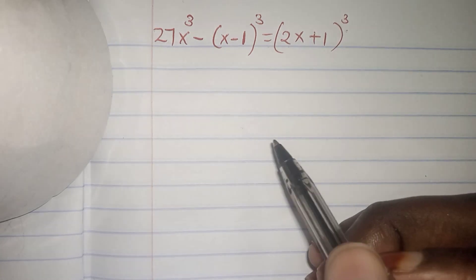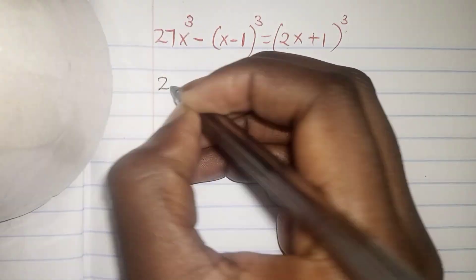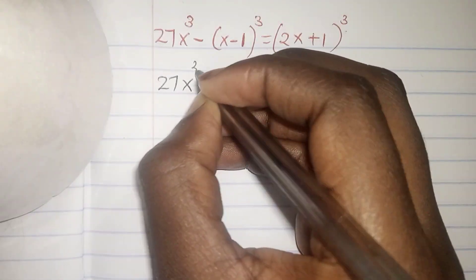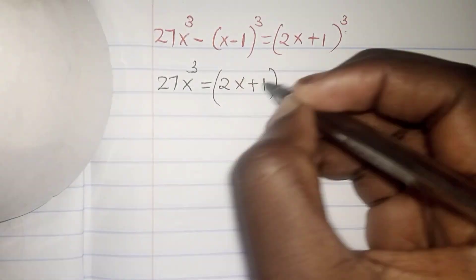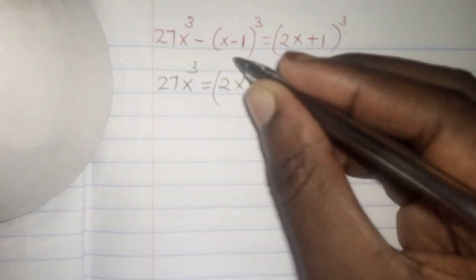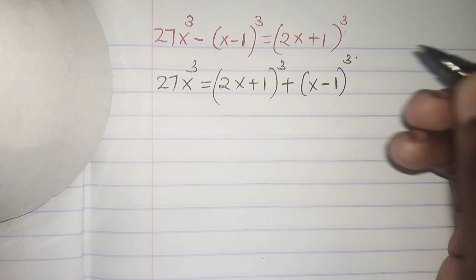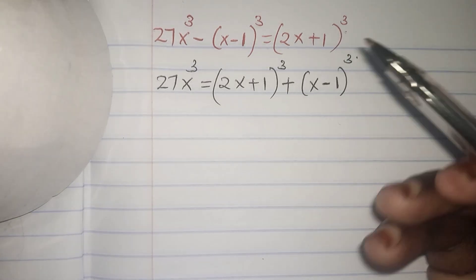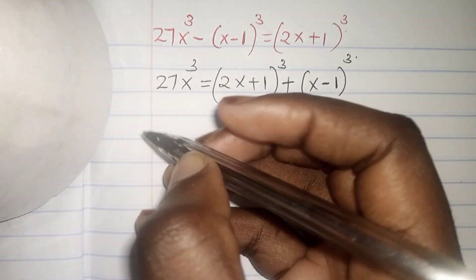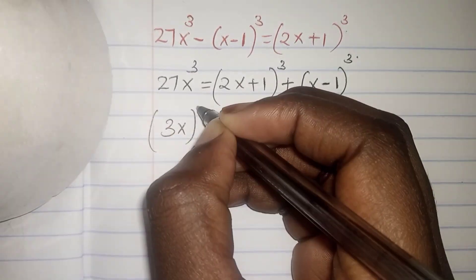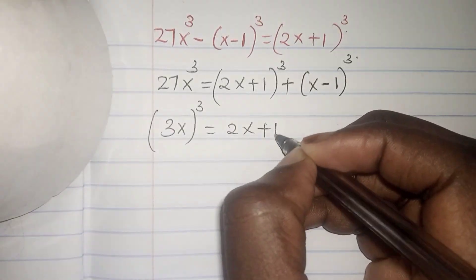We want to get the value of x. What shall we do? We will bring this to the other side — we shall subtract it. So this will be: 27x³ equals (2x plus 1)³ plus (x minus 1)³. Our next step: since 27 is a perfect cube, we can write it as (3x)³ equals (2x plus 1)³ plus (x minus 1)³.